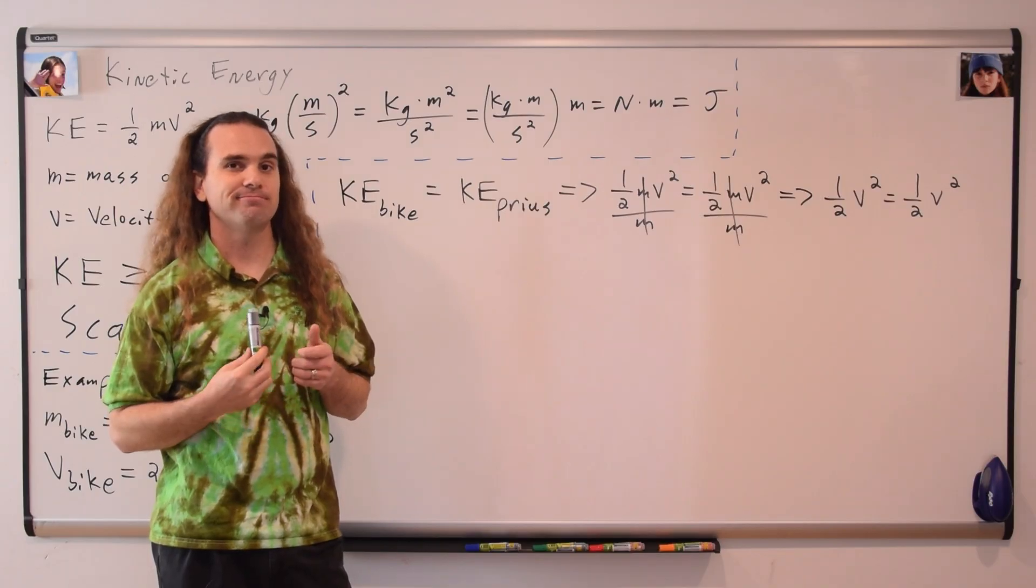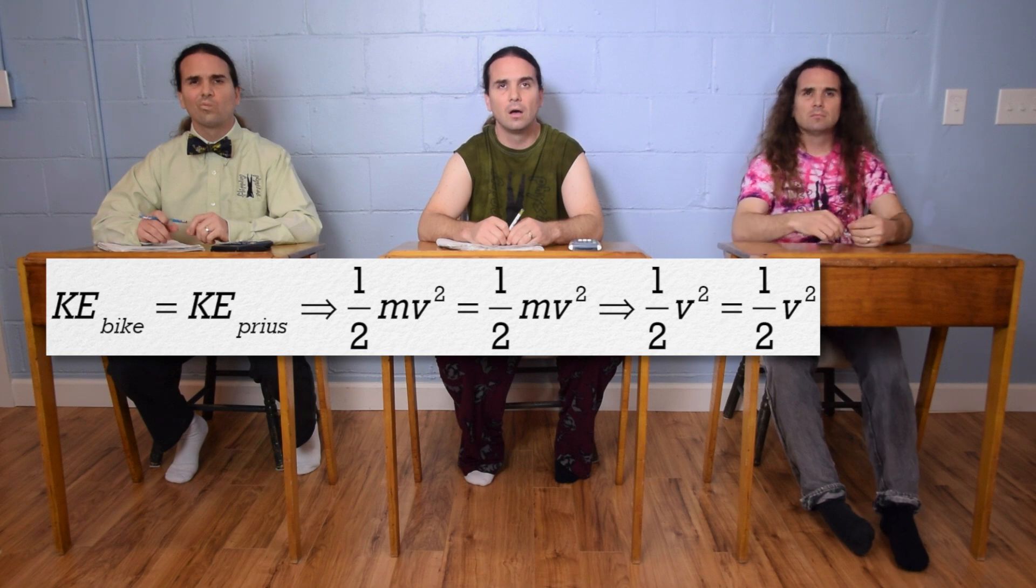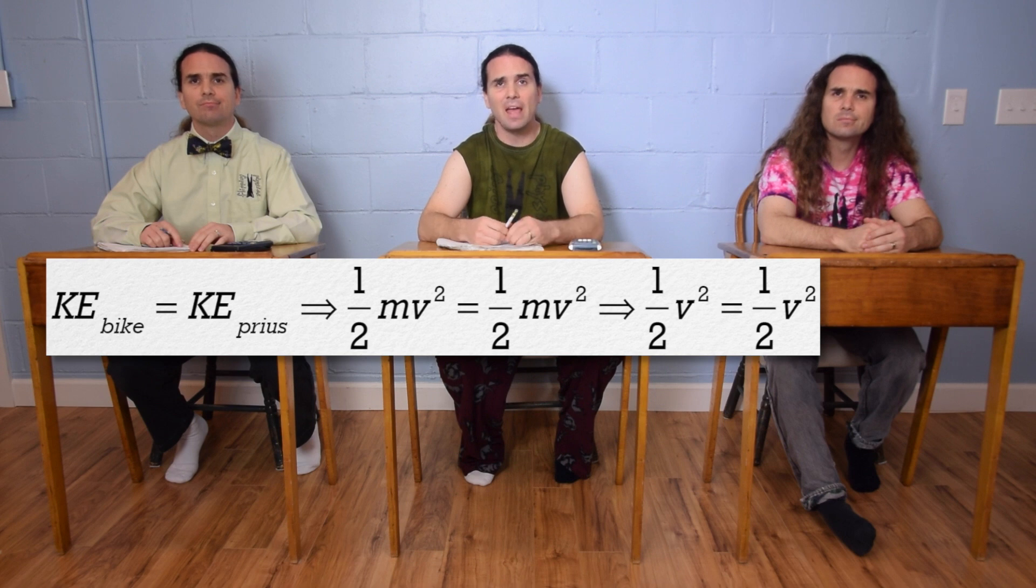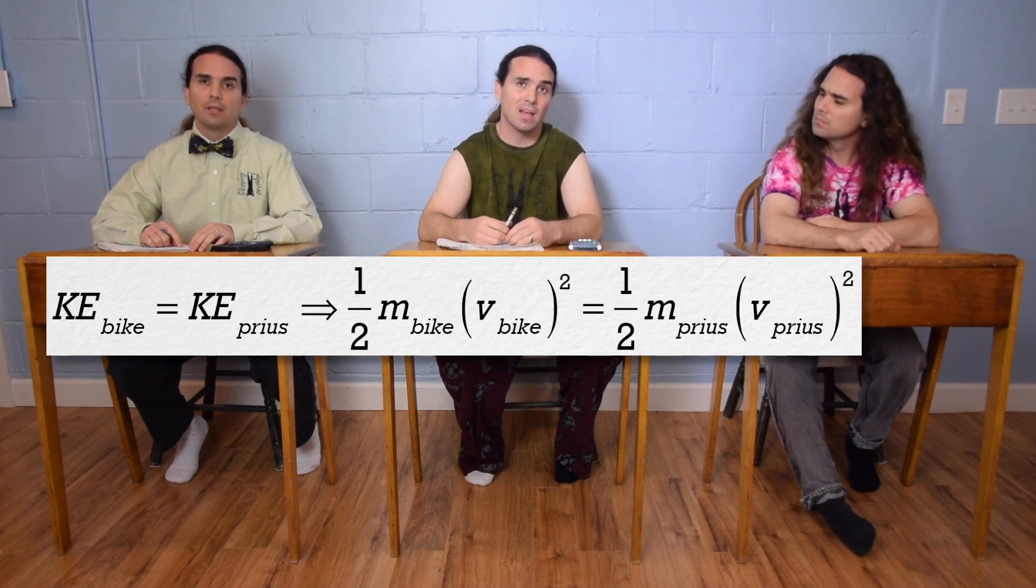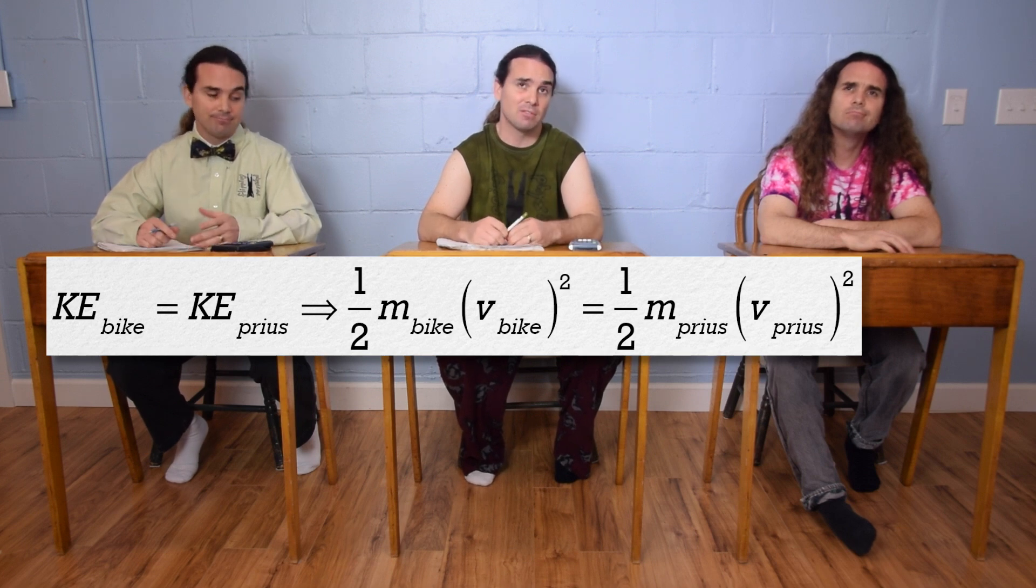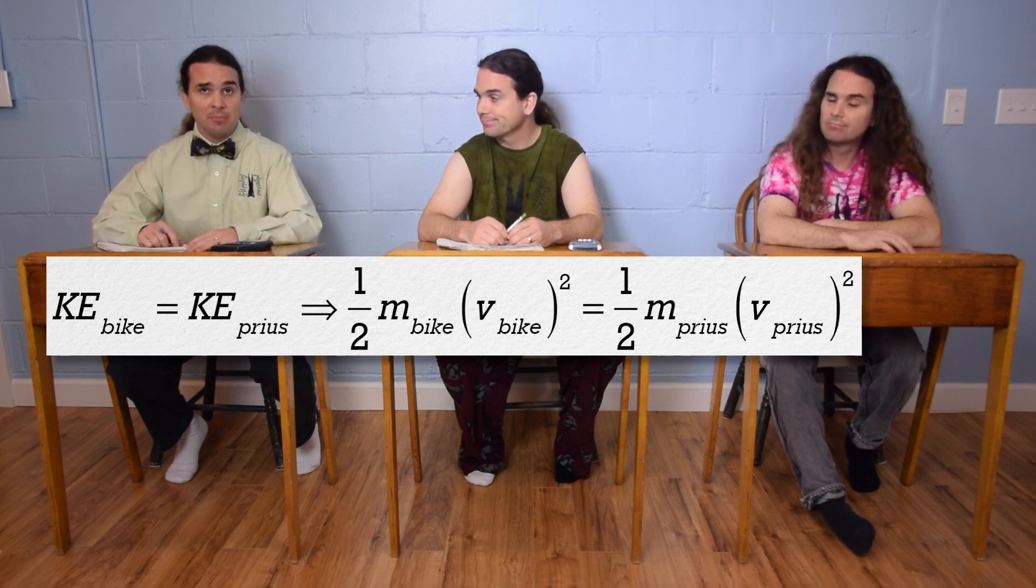That's not right. It's not the same mass. The mass doesn't cancel out. It's one-half times the mass of the bike times the velocity of the bike squared, equals one-half times the mass of the Prius times the velocity of the Prius squared. Subscripts. We always have to remember subscripts. Everybody brought one-half to the party.